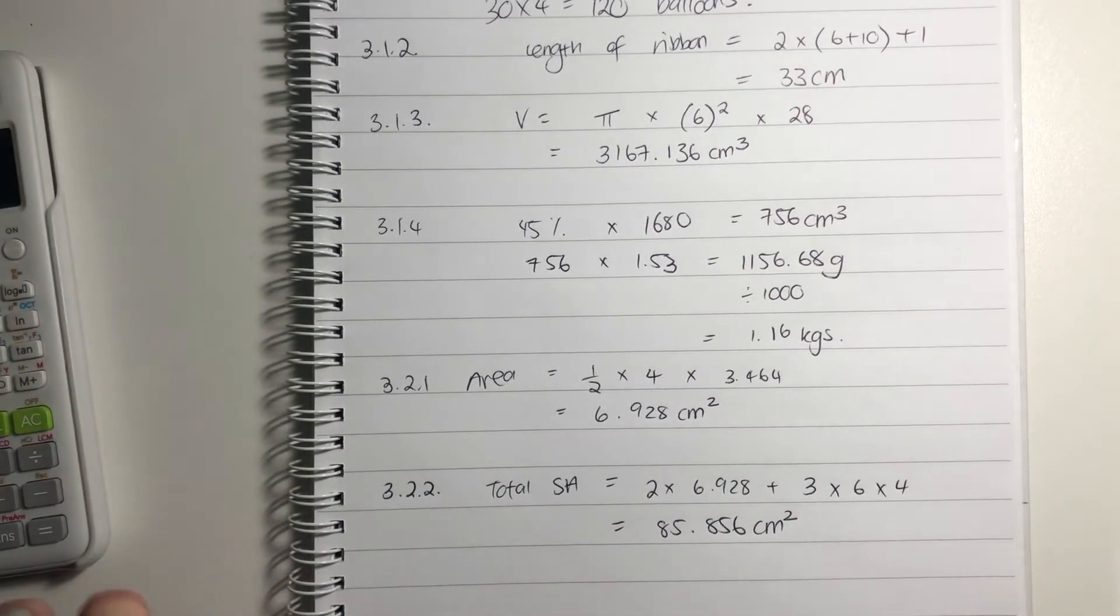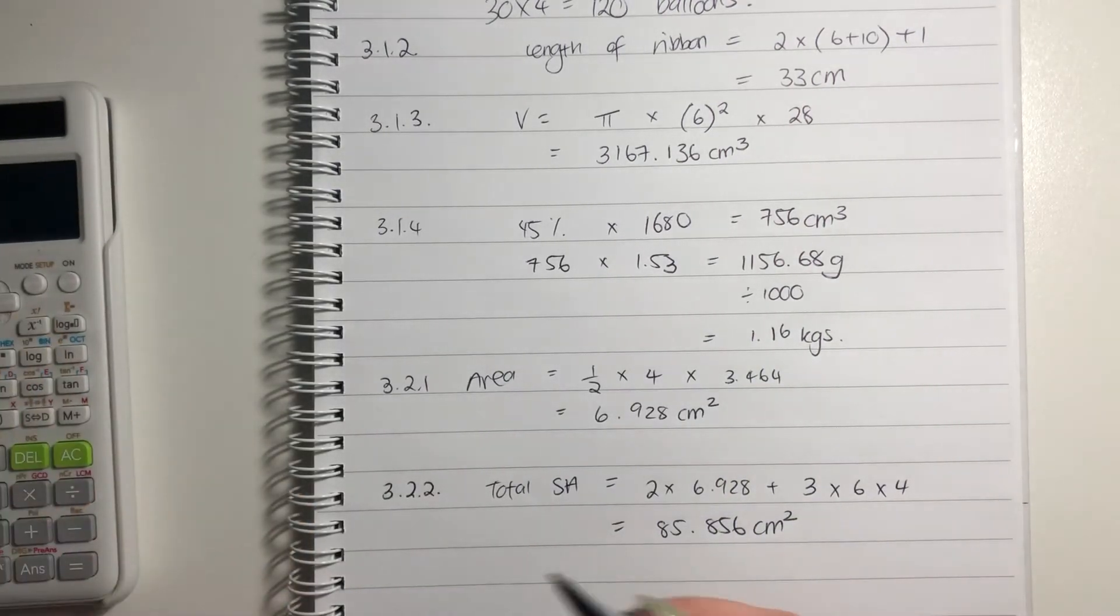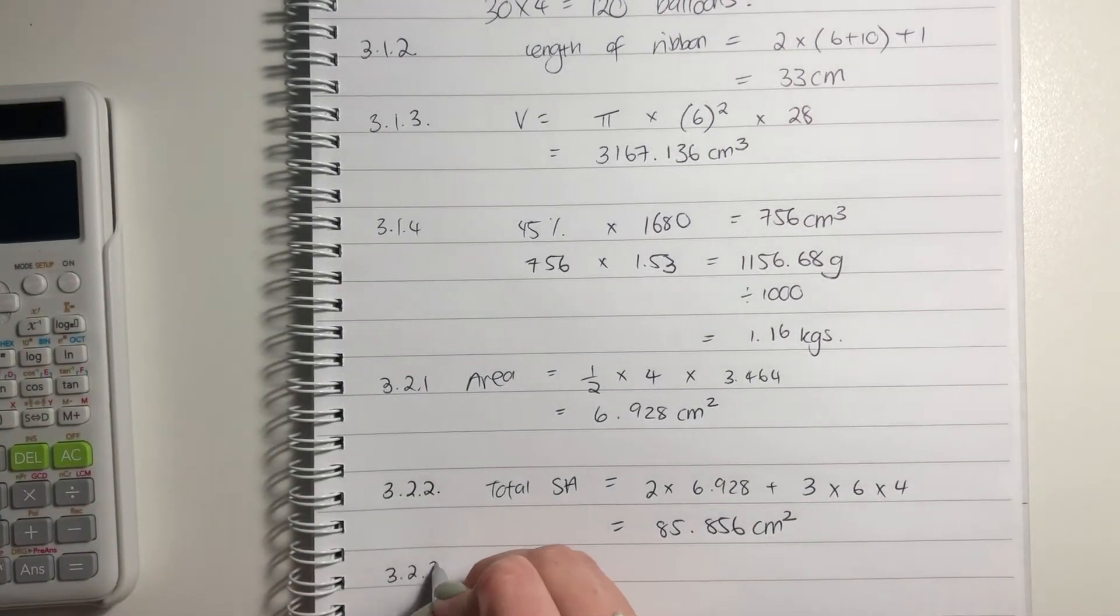So again, here, you don't have to round off. If you want to round off to two decimal places, you can, but because it's a nice, neat three decimal places, you can just leave it. Let's do our last question here now.